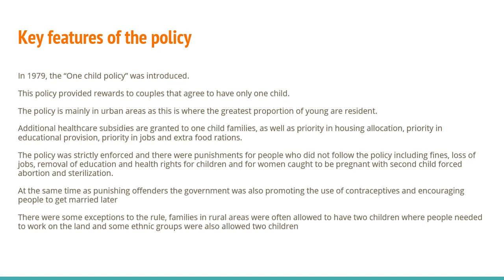In 1979, the one-child policy was introduced in China. This policy provides rewards to couples that agree to have only one child. The policy is mainly in urban areas, as this is where you have the greatest proportion of young people residing within the country. Additional healthcare subsidies are granted to one-child families, as well as priority in housing allocation, priority in education provision, priority in jobs, and extra food rations.